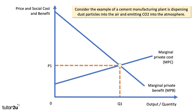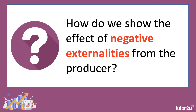The private optimum level of output for a manufacturing plant is where marginal private benefit equals marginal private cost. We're going to assume here that the cement factory only thinks about its own costs and benefits — the supply costs and the revenues from producing extra units. So the private optimum is P1, Q1, where marginal private cost and marginal private benefit intersect.